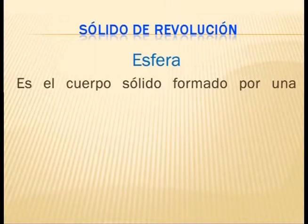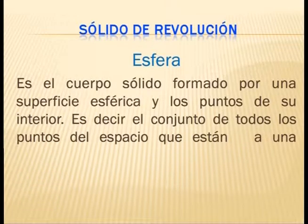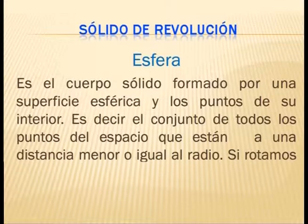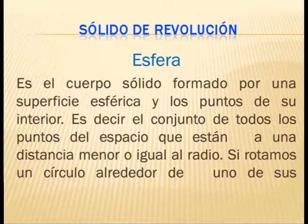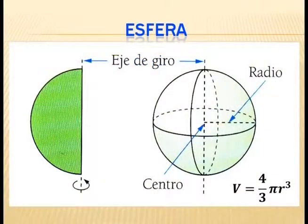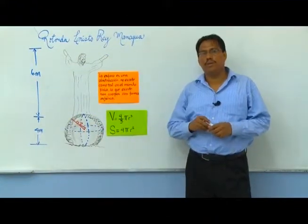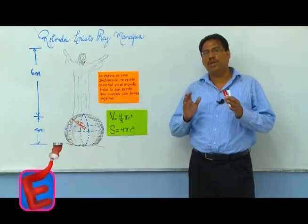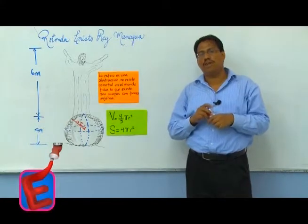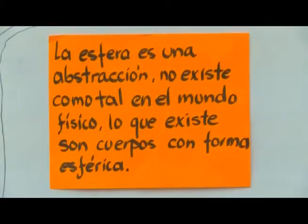Esfera: es el cuerpo sólido formado por una superficie esférica y los puntos de su interior, es decir, el conjunto de todos los puntos del espacio que están a una distancia menor o igual al radio. Si rotamos un círculo alrededor de uno de sus diámetros, el sólido engendrado es una esfera sólida. En la vida cotidiana, la esfera es una abstracción; lo que existe son cuerpos con forma esférica.